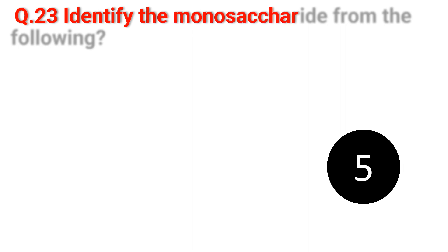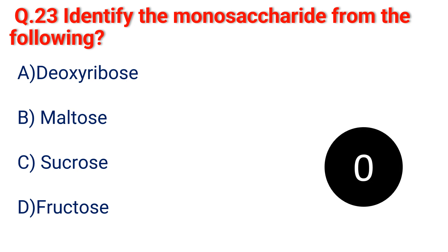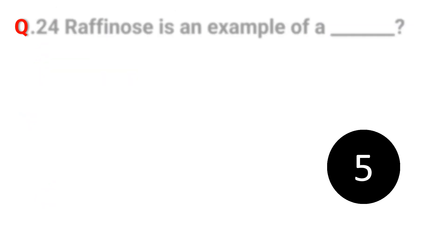Question 23. Identify the monosaccharide from the following: A. Deoxyribose. B. Maltose. C. Sucrose. D. Fructose. The answer is A. Deoxyribose.